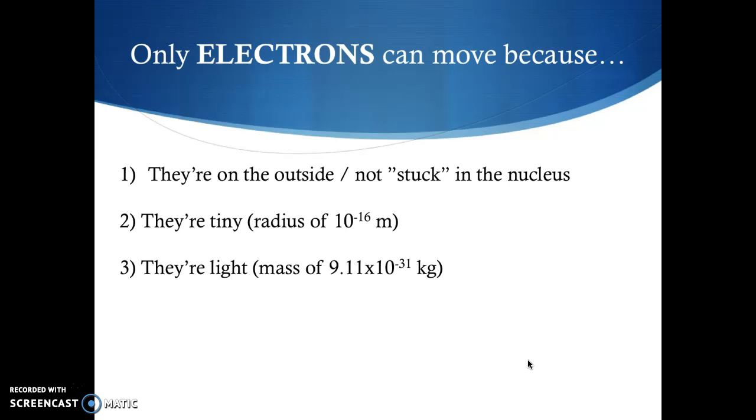So it is for these three reasons that electrons can move and protons and neutrons can't. Again, to recap, electrons are on the outside. They are not stuck in the nucleus. They're tiny and they're light.